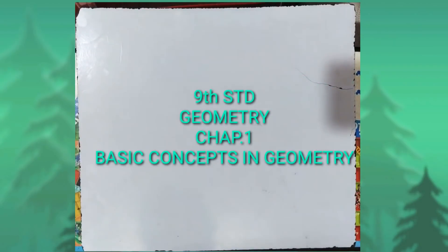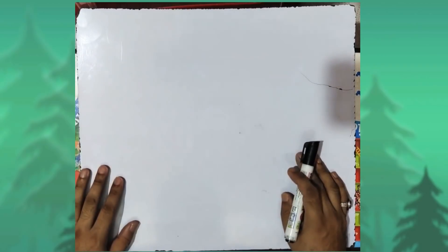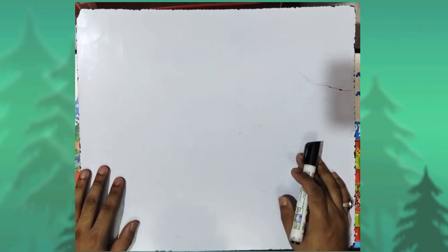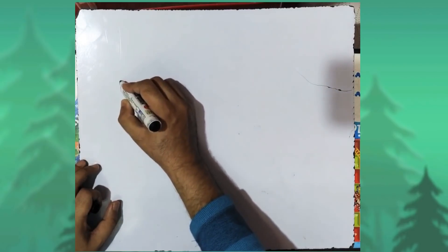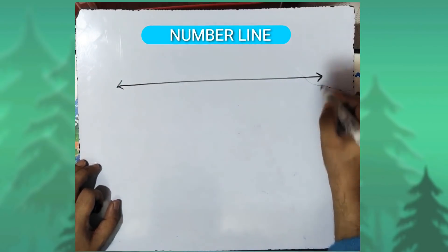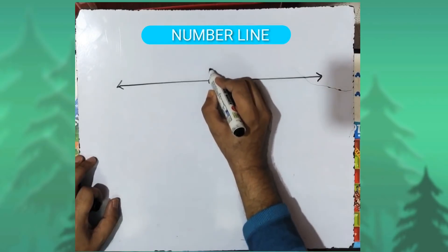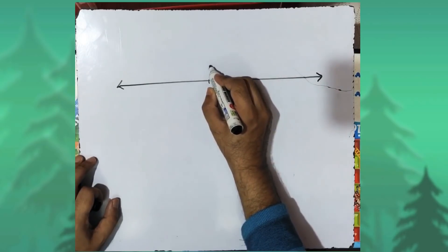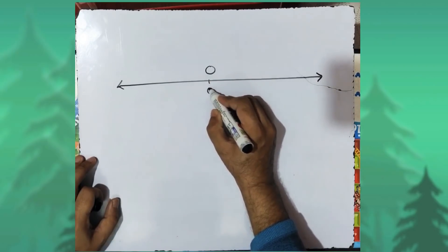In standard geometry, the first chapter is Basic Concepts in Geometry. For doing Exercise 1.1, we need to understand about the number line. I have drawn a line here. In between we have an origin denoted by O, and the coordinate of origin O is zero.